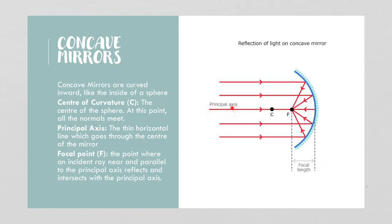The principal axis is a thin horizontal line that goes through the center of the mirror. The focal point is the point where an incident ray near and parallel to that principal axis hits the mirror and then reflects back through the focal point. So rays close to the mirror will reflect back through the focal point.